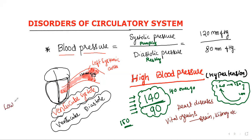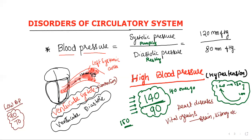Low blood pressure is a condition where, compared to the normal of 120, if a person is having 90 by 70, we can consider it as low blood pressure. A student then asked: 'Systolic means contraction, sir?' Yes — systole means contraction, diastole means relaxation. During contraction, blood goes with great pressure — that is what we call pumping pressure, or systolic pressure. Diastole means relaxation — that is clear.